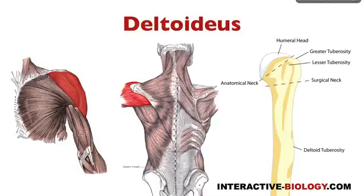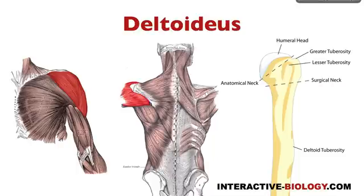So the origins — we're going to go from posterior to anterior. Starting with this middle picture here, the first point of origin would be the inferior margin of the spine of the scapula. Remember with the trapezius it was the superior margin, so now we're dealing with the inferior margin of the spine of the scapula.